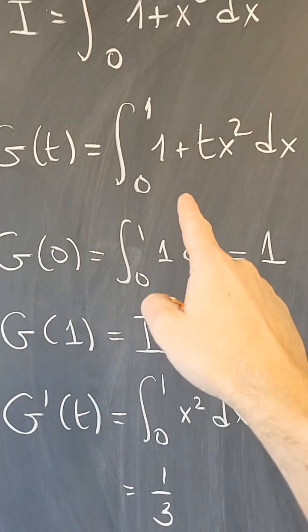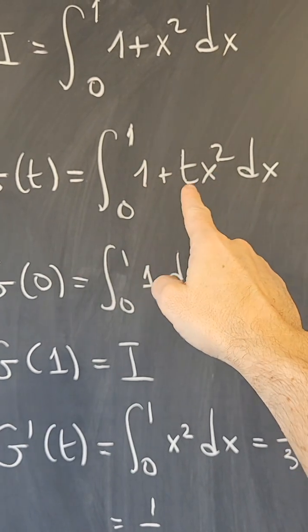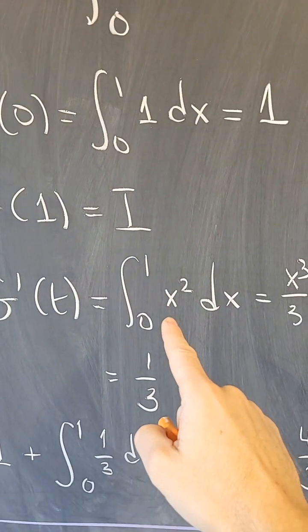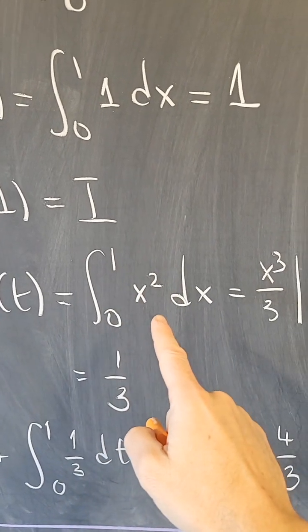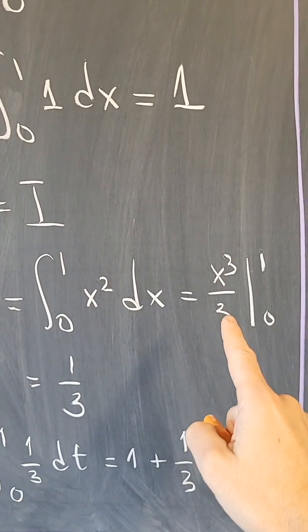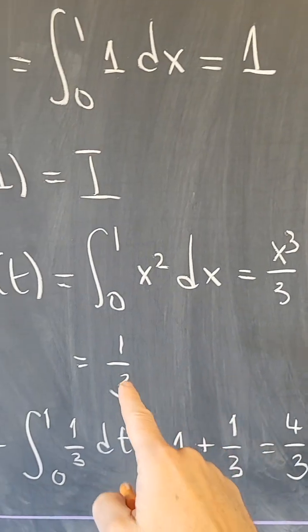Now, what is the derivative? I have to take the derivative inside with respect to t, so I just get x squared here, and that integral is easy. That is x cubed over 3 from 0 to 1, so that's just a third.